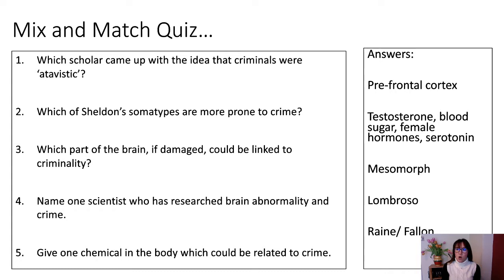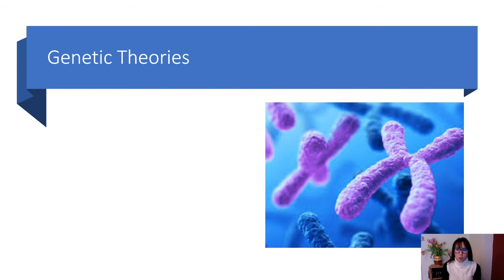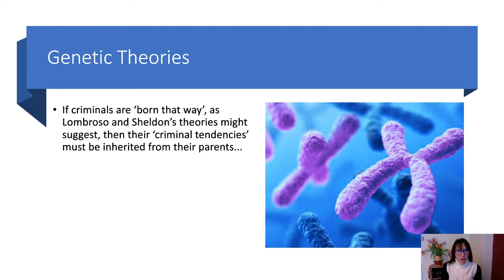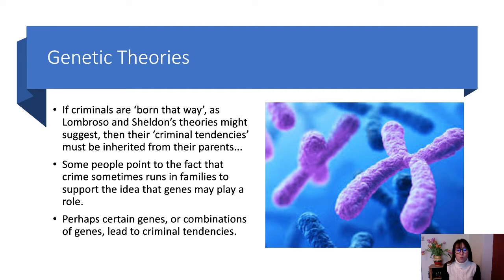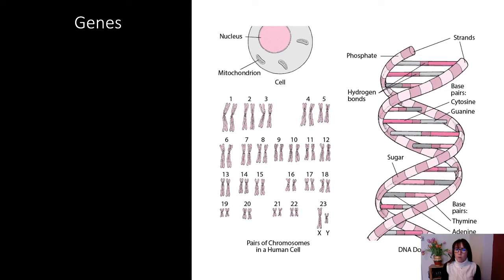So, genetic theories: if criminals are born that way, as Lombroso and Sheldon's theories might suggest, then their criminal tendencies must be inherited from their parents. Some people point to the fact that crime sometimes runs in families to support the idea that genes may play a role — perhaps certain genes or combinations of genes lead to criminal tendencies.